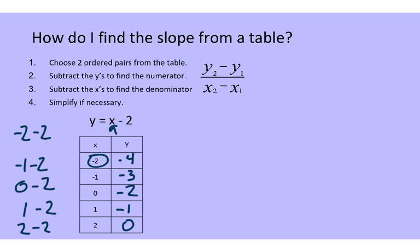After we've filled in our table, we have to choose two ordered pairs from that table. You can choose any two ordered pairs you want. I like to choose as many positive as possible because I think that's easier to work with. So I'm going to choose these two down at the bottom — the ordered pair (1, -1) and the ordered pair (2, 0).